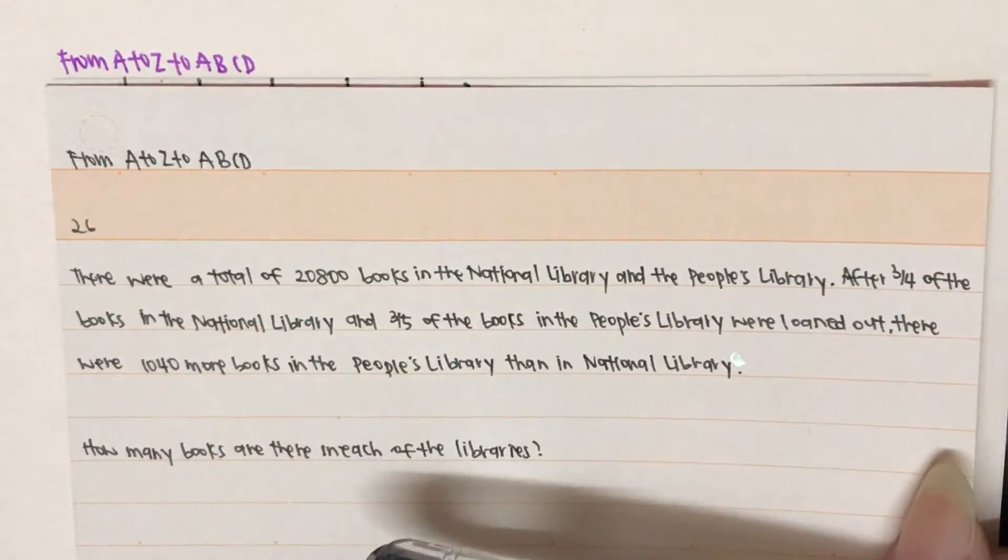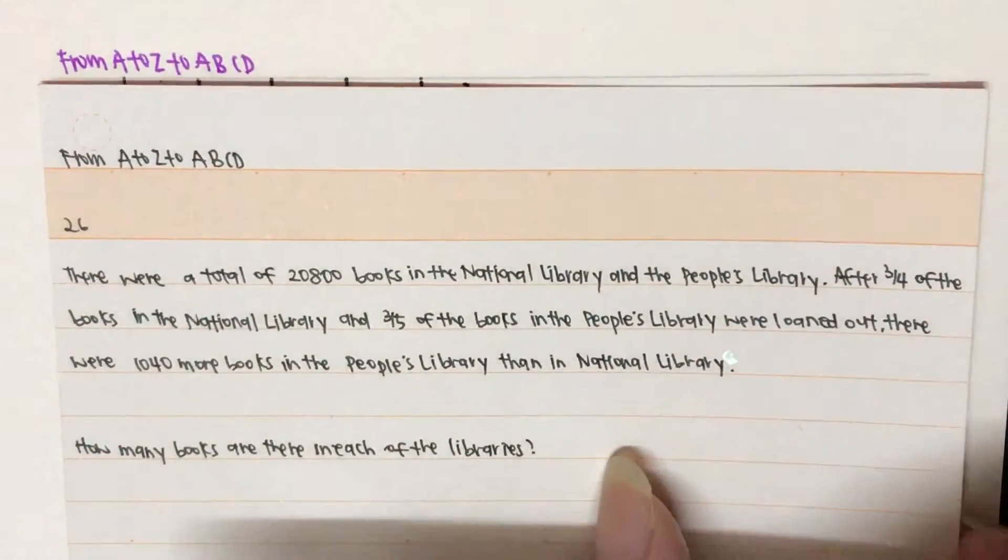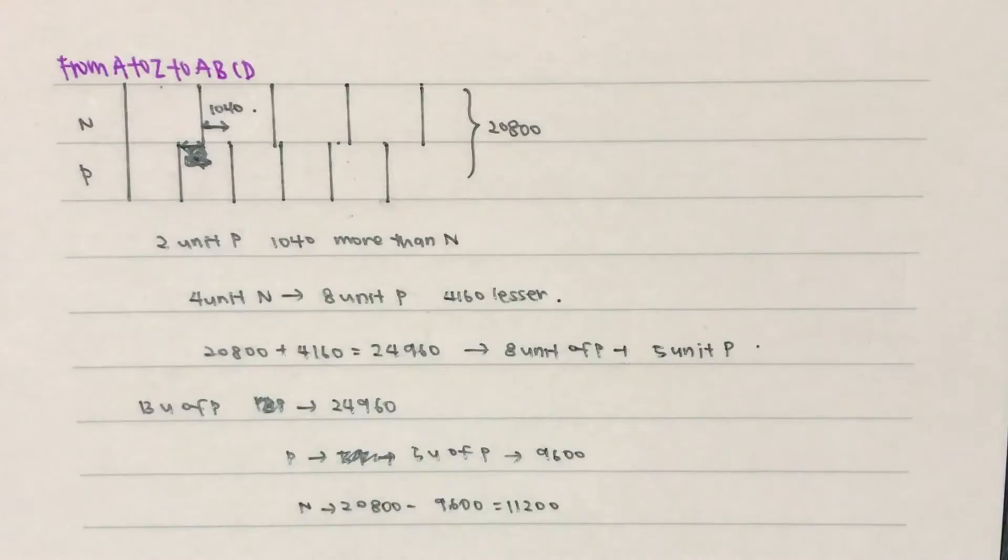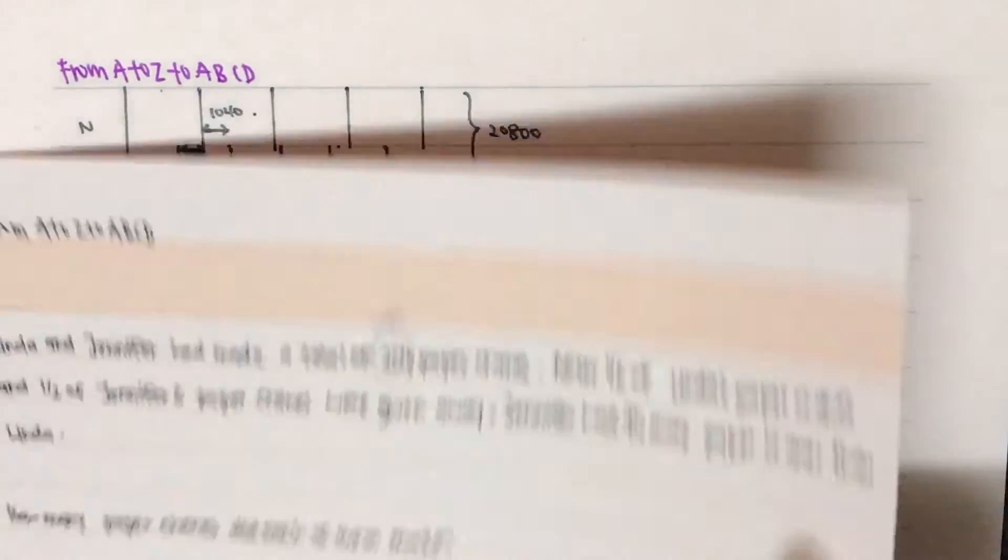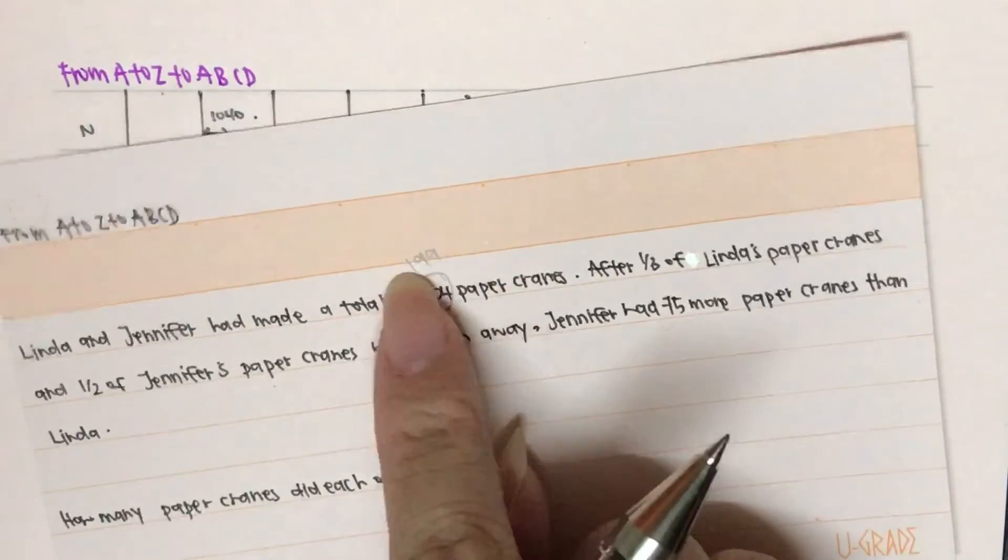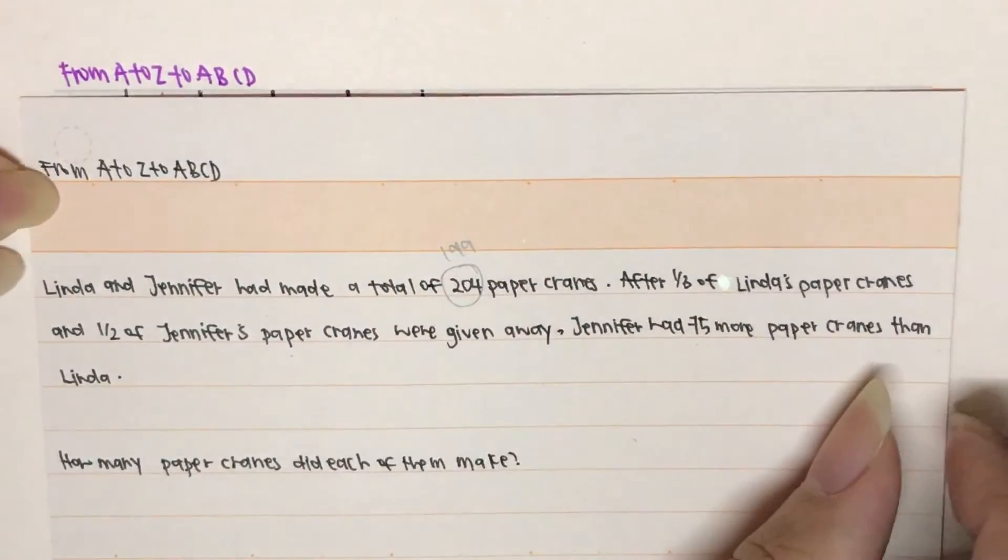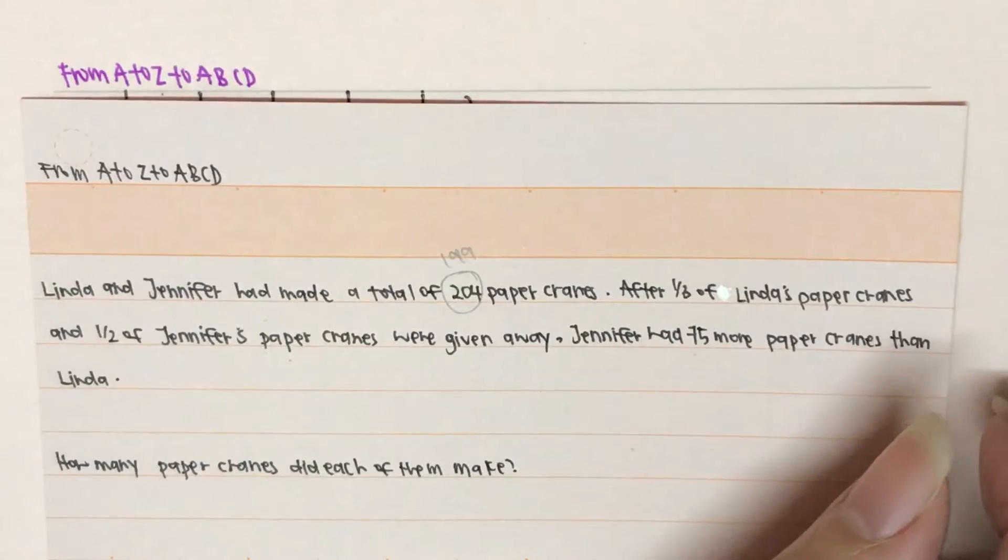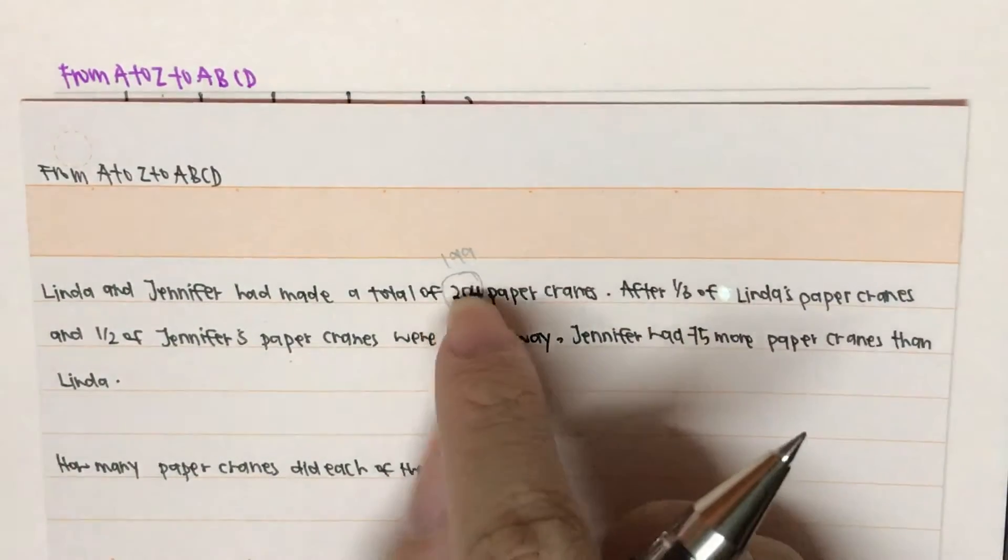The question that we just went through is question 1 of worksheet 26. There are still more questions available. This is question 2. So, just to take note that the number over here should be 199, just in case you download the unedited version of the worksheet. This is 199.